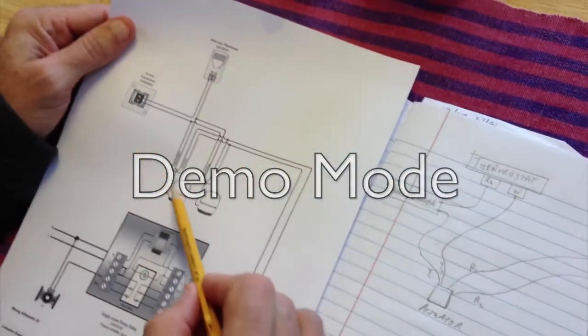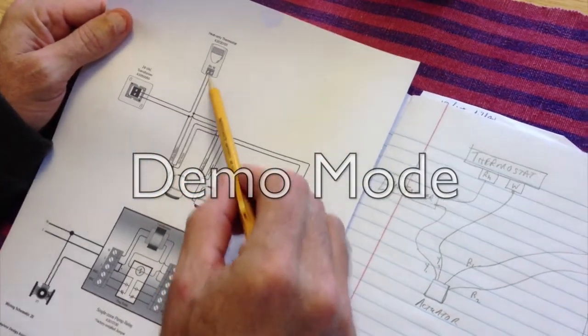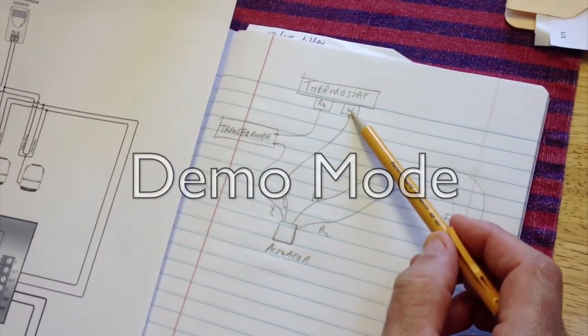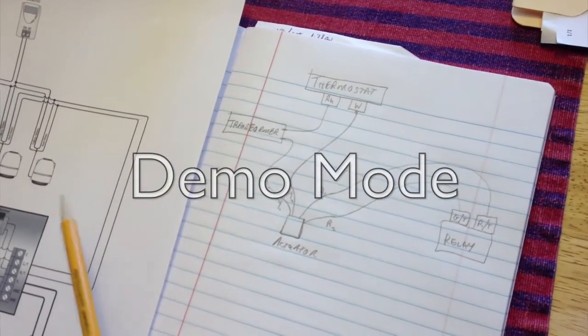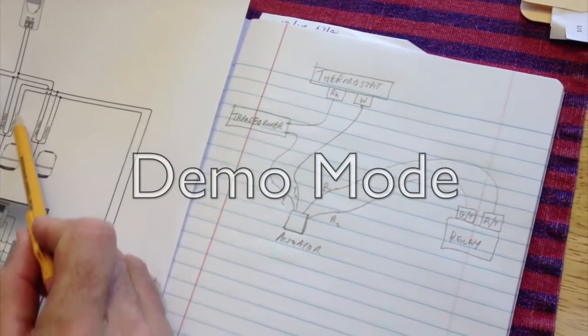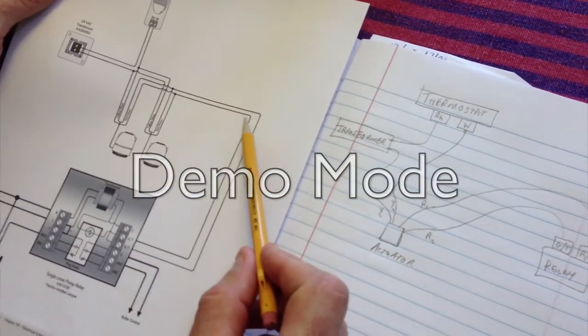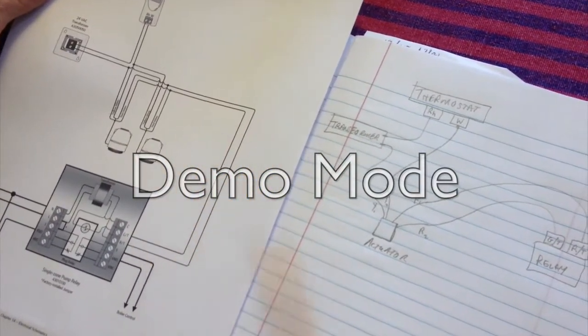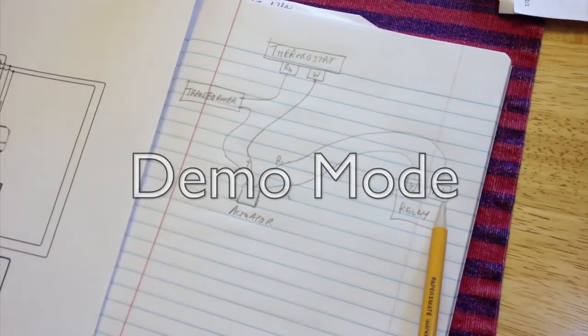Then we also have another yellow wire that goes to the thermostat, and that's this one here. And then we have red wires, and the red wires come out here and here, and they go into GT and RT on the relay.